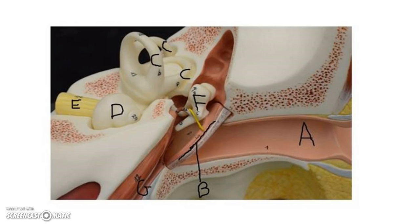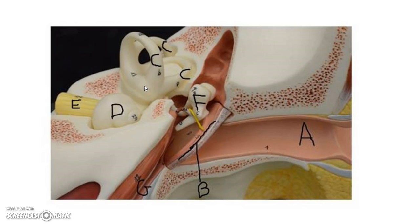Another structure we have is the ampulla, located at the base of the semicircular canals. The ampulla contains the receptors for sensory rotation. When the fluid swooshes in the semicircular canal, the receptors in the ampulla send action potentials down the vestibular cochlear nerve. The last structures, located in the vestibule, are the utricle and the saccule. They provide information on the sensation of gravity and linear acceleration, sending signals down the vestibular cochlear nerve.